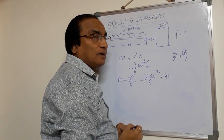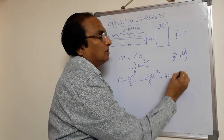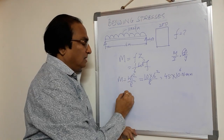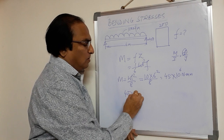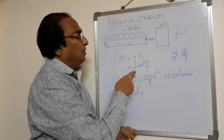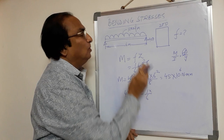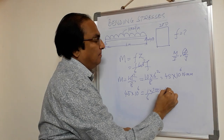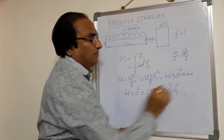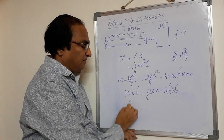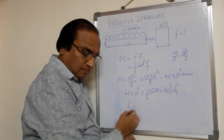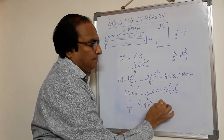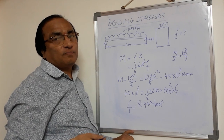Converting to Newton-mm, this will be multiplied by 10⁶ Newton-mm. Using this in the equation: 45 × 10⁶ = (1/6) × 200 × 400² × F. The only unknown here is F. Solving this, bending stress F = 8.44 N/mm².